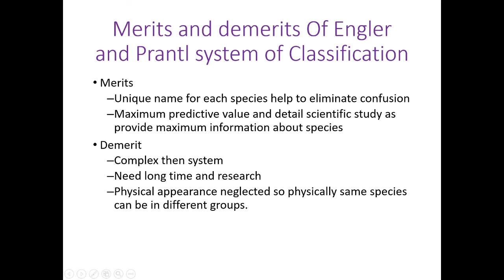Now let us see what are the merits and demerits of Engler and Prantl's system of classification. Let us see the merits first. It is the phylogenetic system — plant groups are arranged according to their evolutionary affinities, with primitive groups followed by advanced groups.